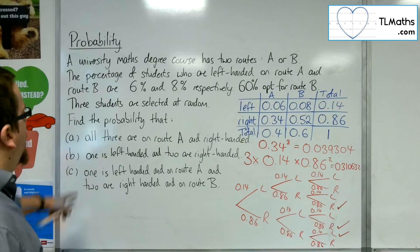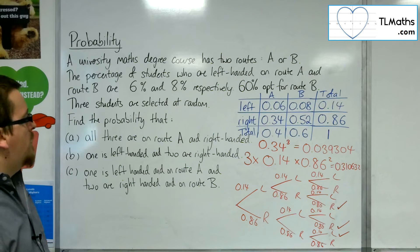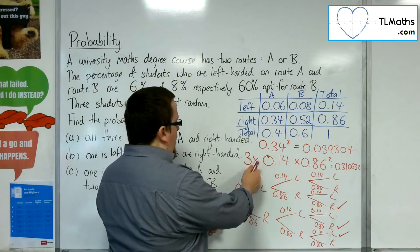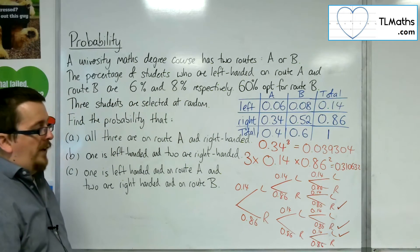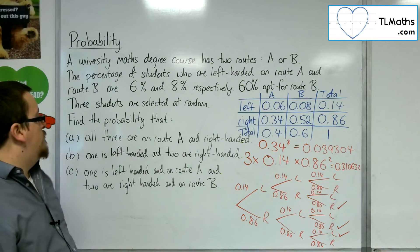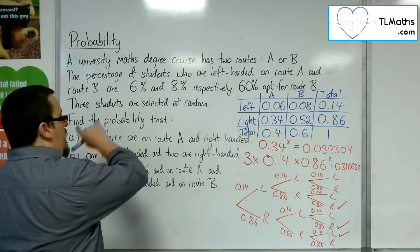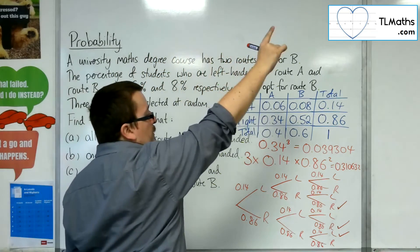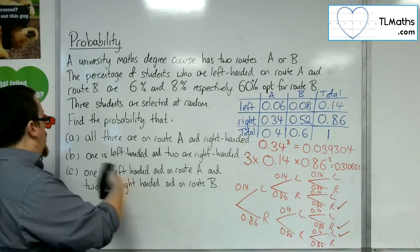Thinking about the first question again as a probability tree — all three are on route A and right-handed. You would have had four options at each node: A left-handed, A right-handed, B left-handed, B right-handed. But there's only one way through to get all three on route A and right-handed: route A right-handed, route A right-handed, route A right-handed. So it's 0.34 times 0.34 times 0.34 with no multiplication needed.